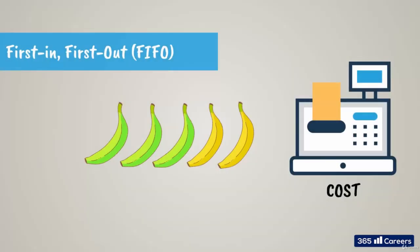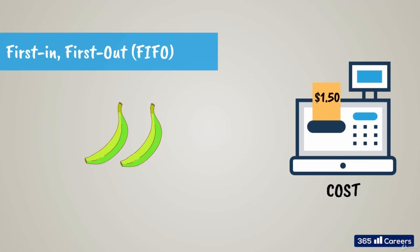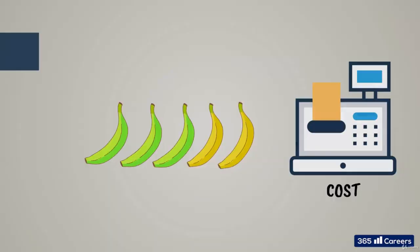The next method is the first in, first out method, also known as FIFO, where the first item purchased is assumed to be the first item sold. In our case, the company bought $1.50 bananas first and then $1.30 bananas. So until $1.50 bananas have been sold, we will use $1.50 as the cost of bananas we are selling. Once the bananas delivered on Monday have been sold out to customers, we'll be ready to use $1.30 as our cost.